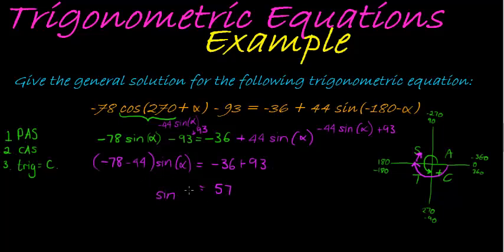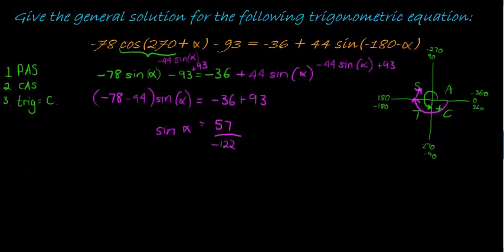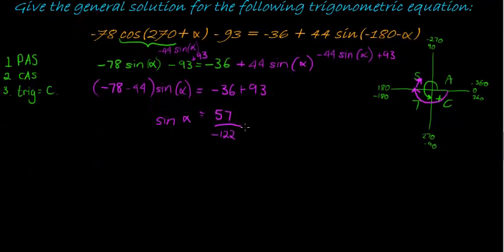And then the coefficient in front of the sine, negative 78 minus 44 gives me 82, minus another 40, it's 122. So negative 122 is the coefficient, I divide it on the other side, negative 122, and now I've got my trig ratio equal to a constant.